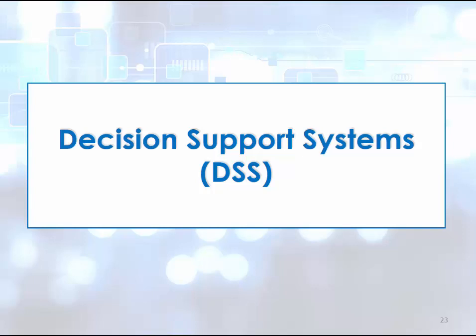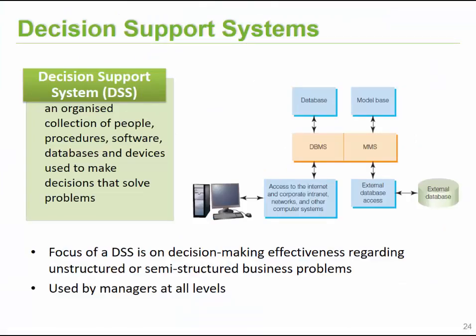Let's continue and look at decision support systems. A decision support system can be defined as an organized collection of people, procedures, software, databases, and devices — typically what we know as computer-based information systems — and the aim of these systems is to solve problems.